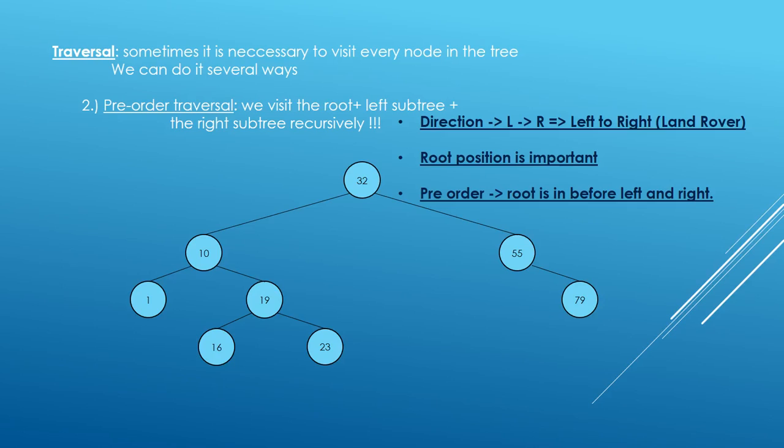Pre-order traversal. Start with the root, then the left subtree, and then the right subtree. The same trick here, direction's very important, Land Rover.